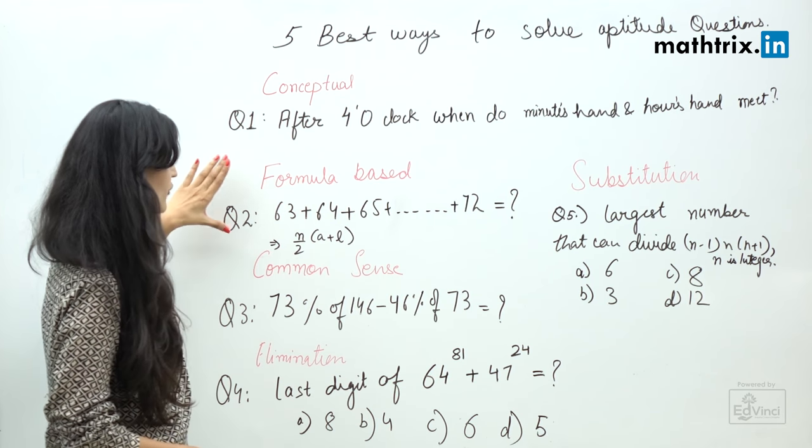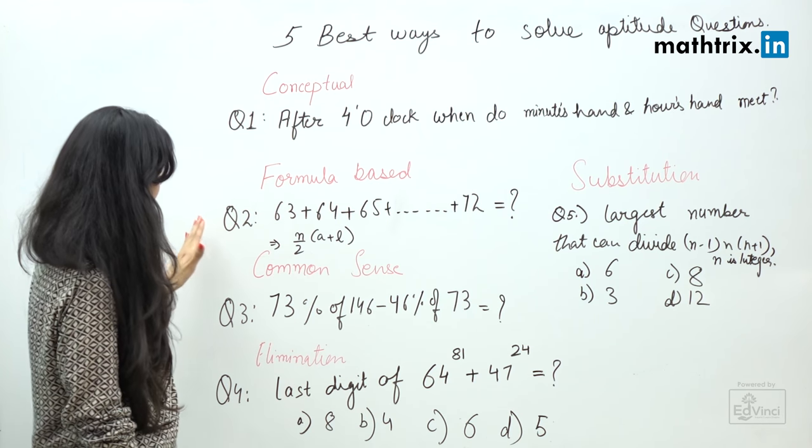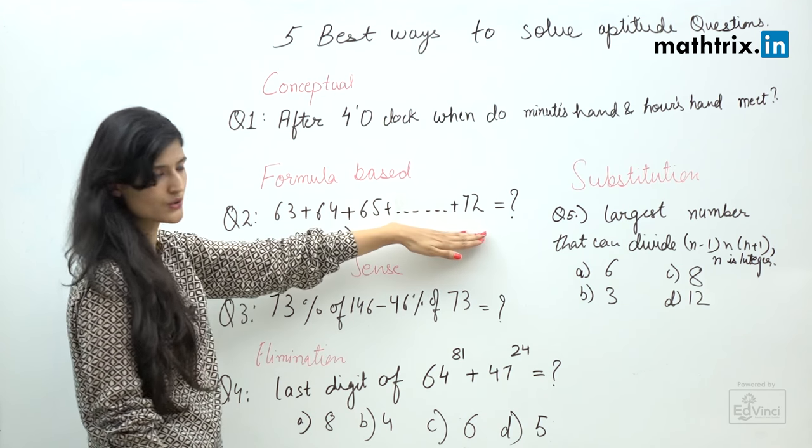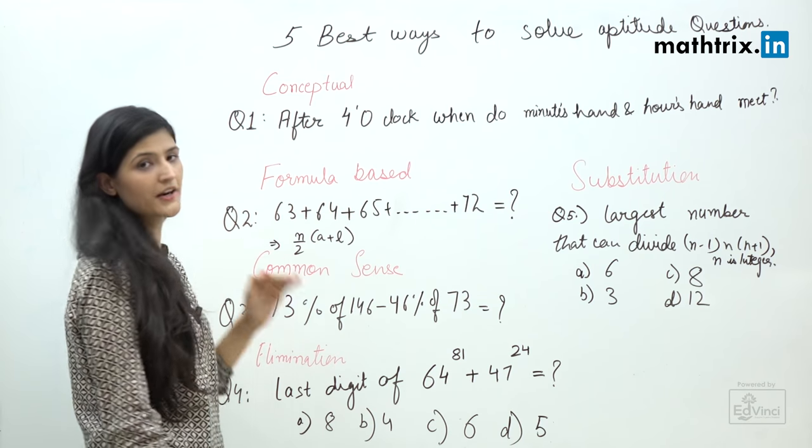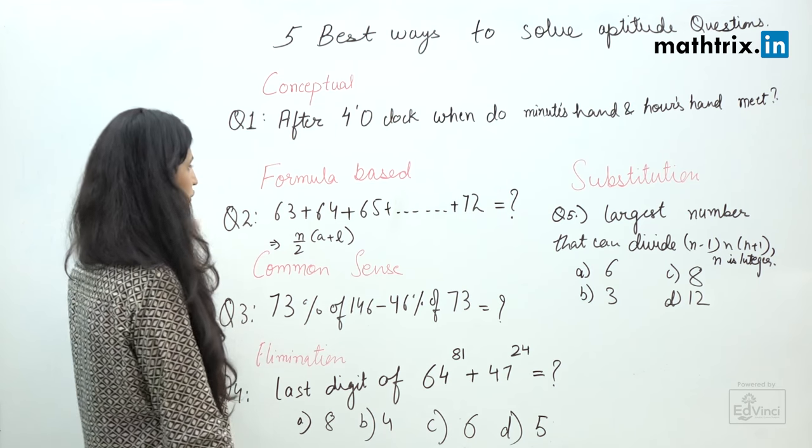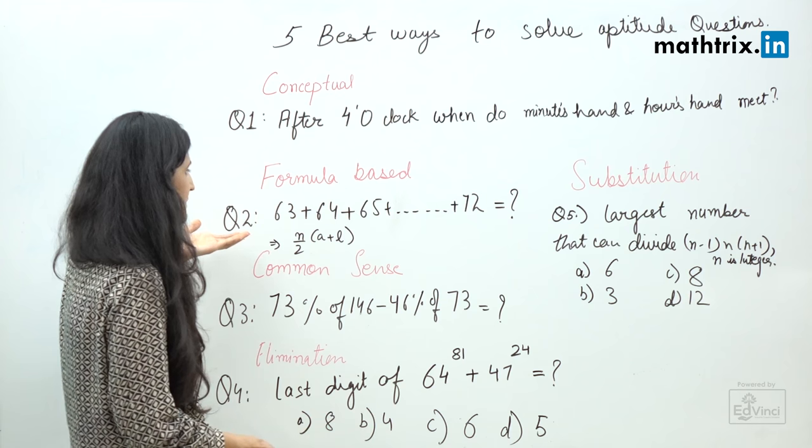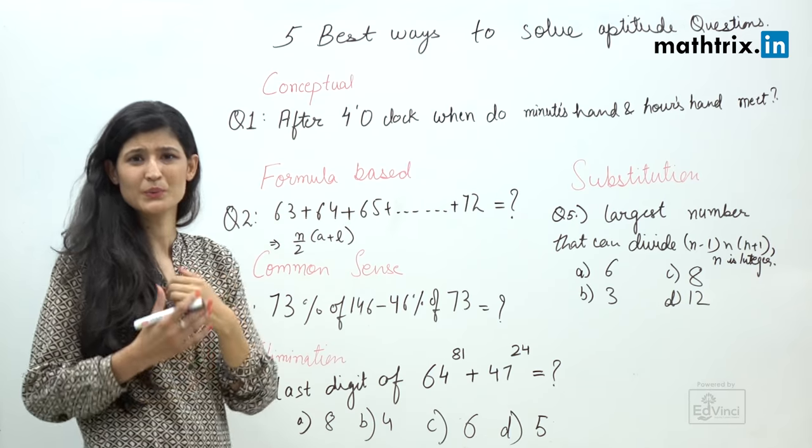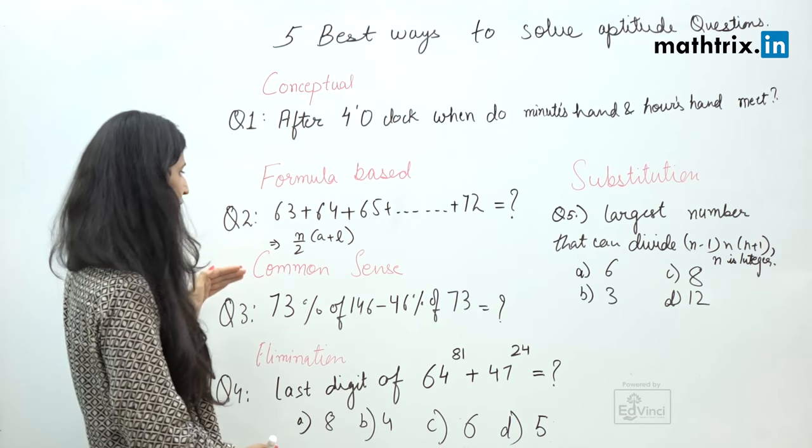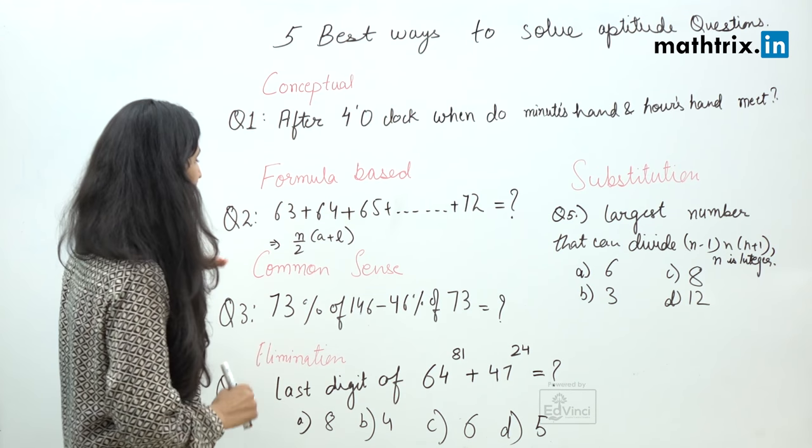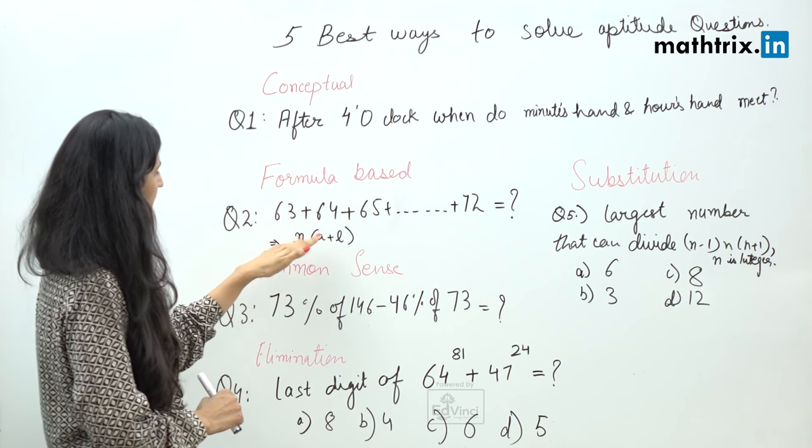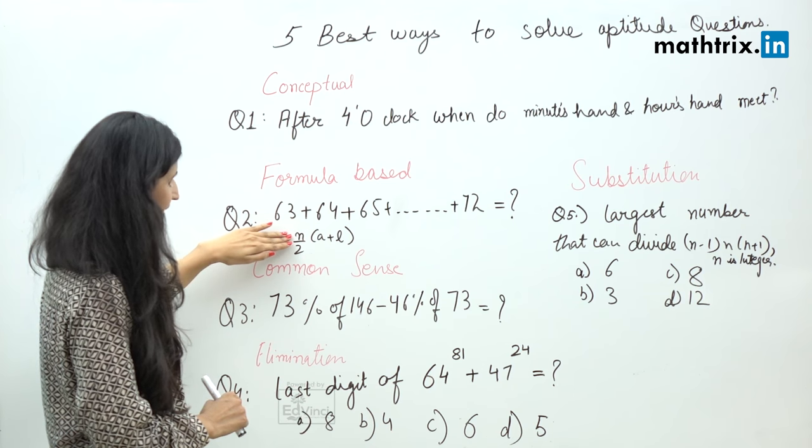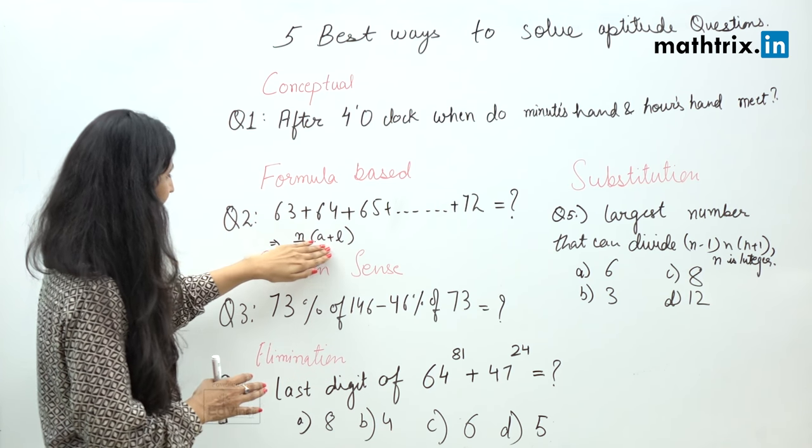Moving on to the second approach, which is a formula-based approach. The example here I took is 63 + 64 + 65 and so on + 72. This is nothing but an arithmetic progression. You can solve this by adding all these numbers, but why should we do that when we already know there's a formula for AP? Formula for sum of AP is n/2 × (a + l), where n is number of terms, a is first term, and l is the last term.